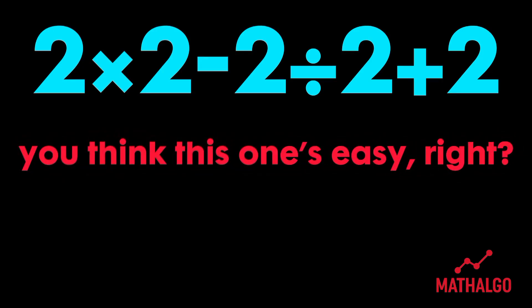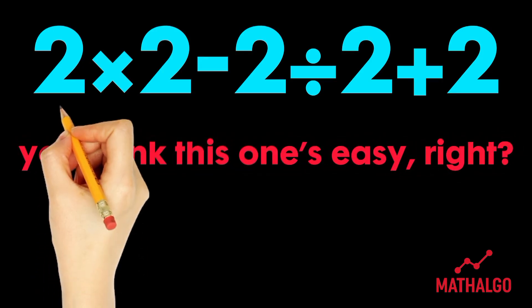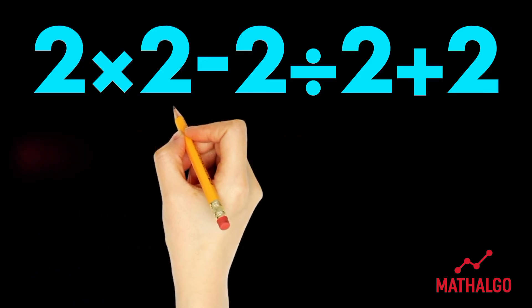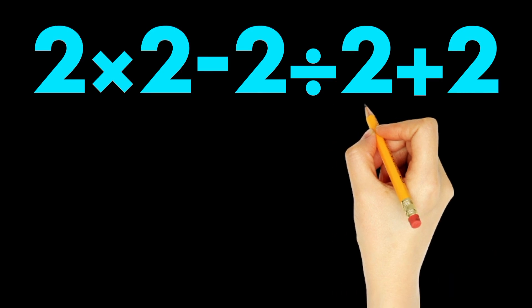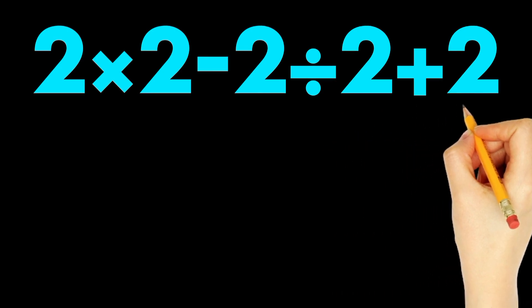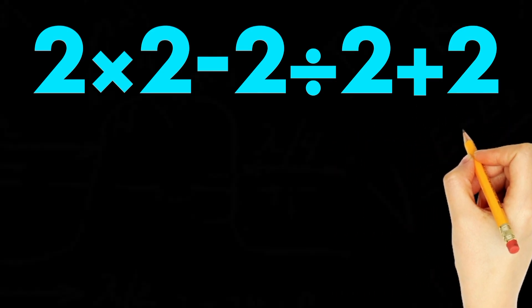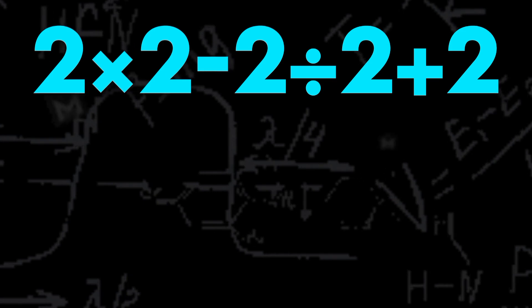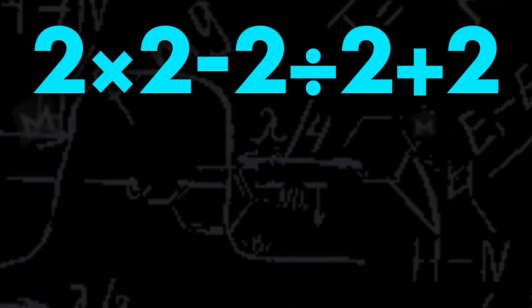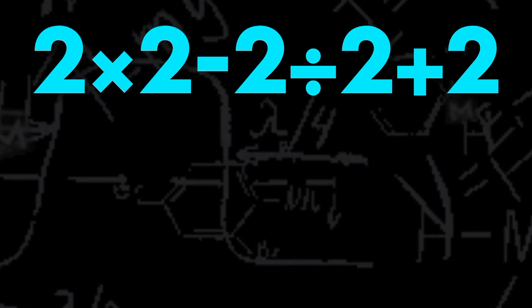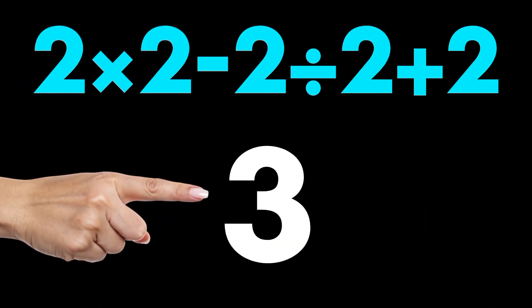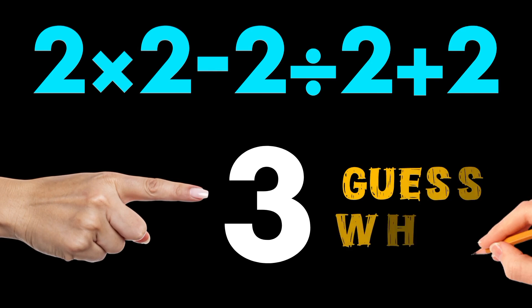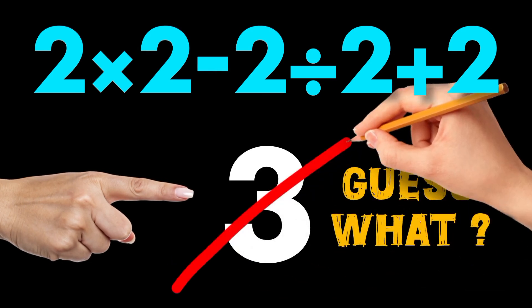You think this one's easy, right? 2 times 2 minus 2 divided by 2 plus 2. Almost everyone looks at this and confidently says that's 3. But guess what? That's wrong!